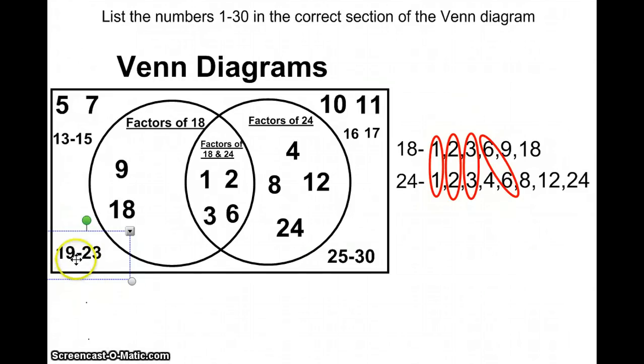Instead of listing each number individually I put a dash. The reason being because 19 through 23 are consecutive numbers.